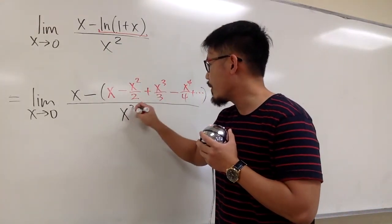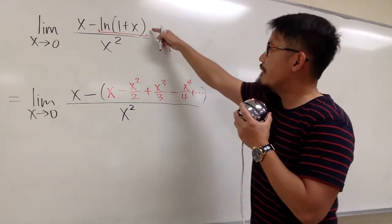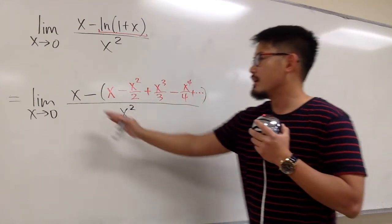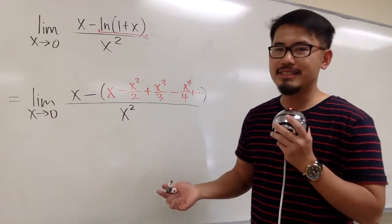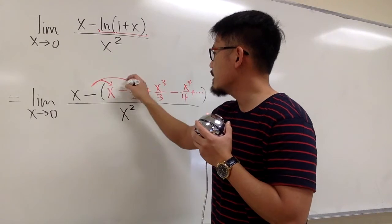And then we have x squared in the denominator. The good thing here is, after we change ln(1+x) into its power series, this is just like a polynomial on top. We can combine terms.